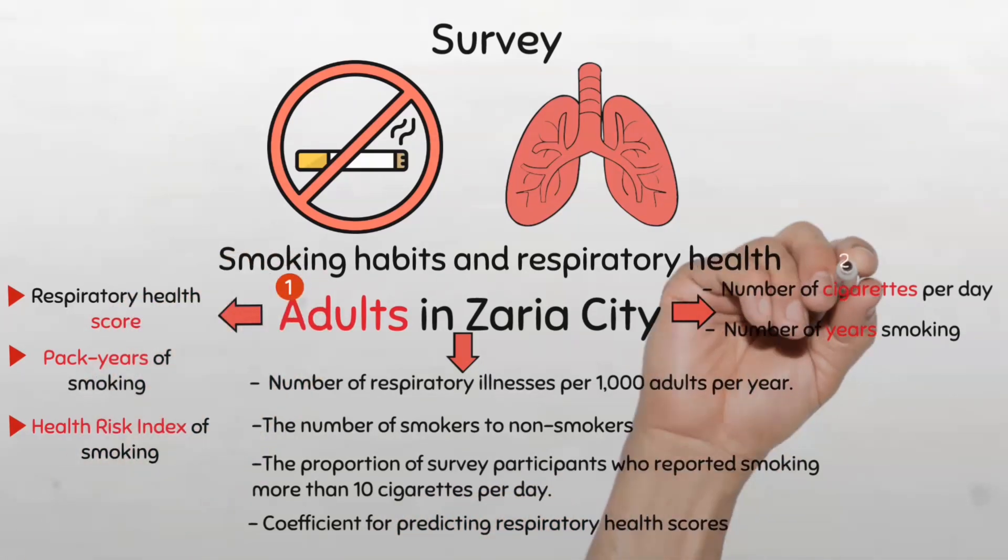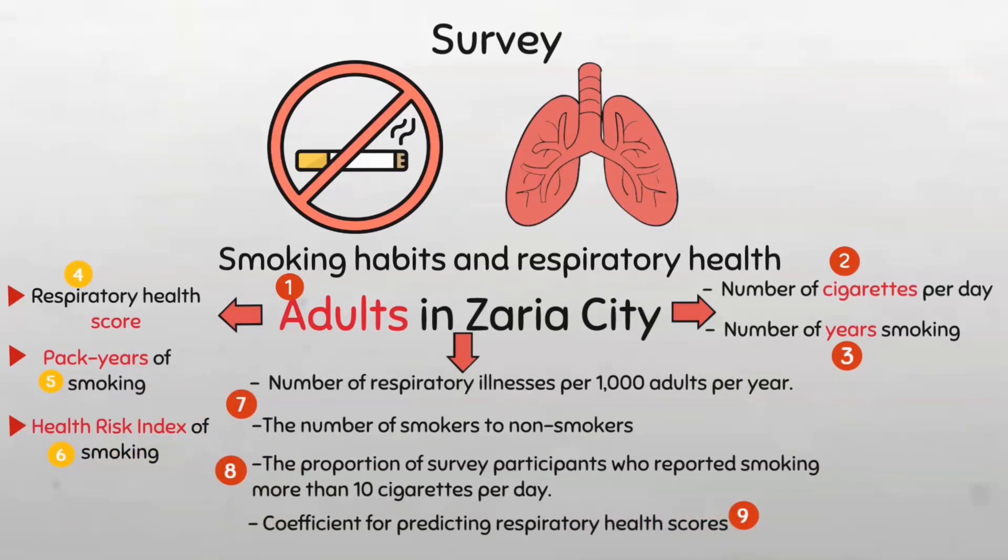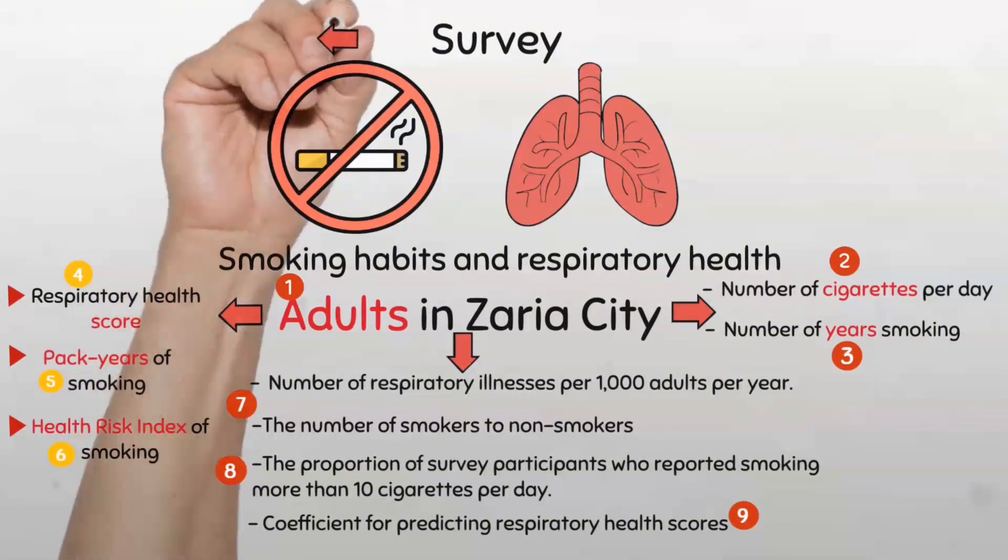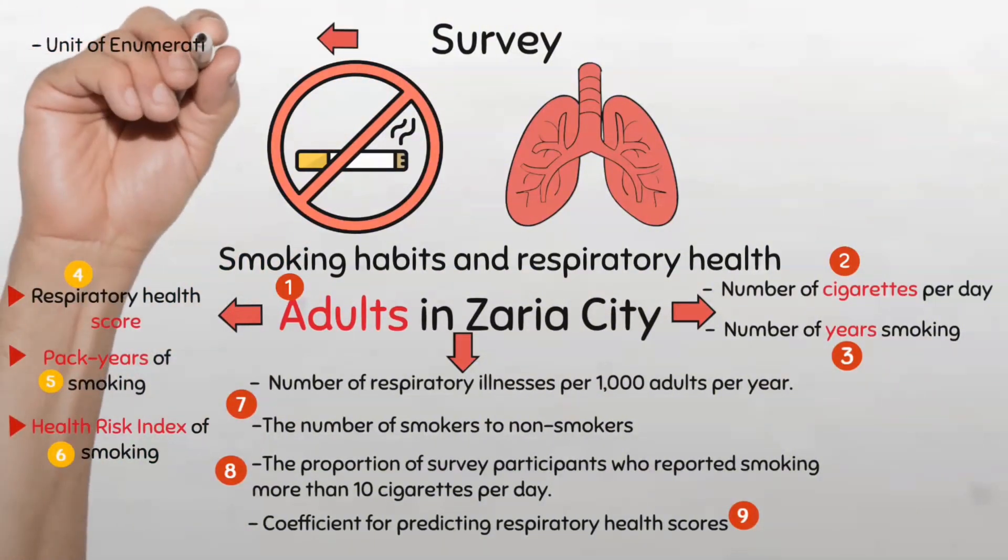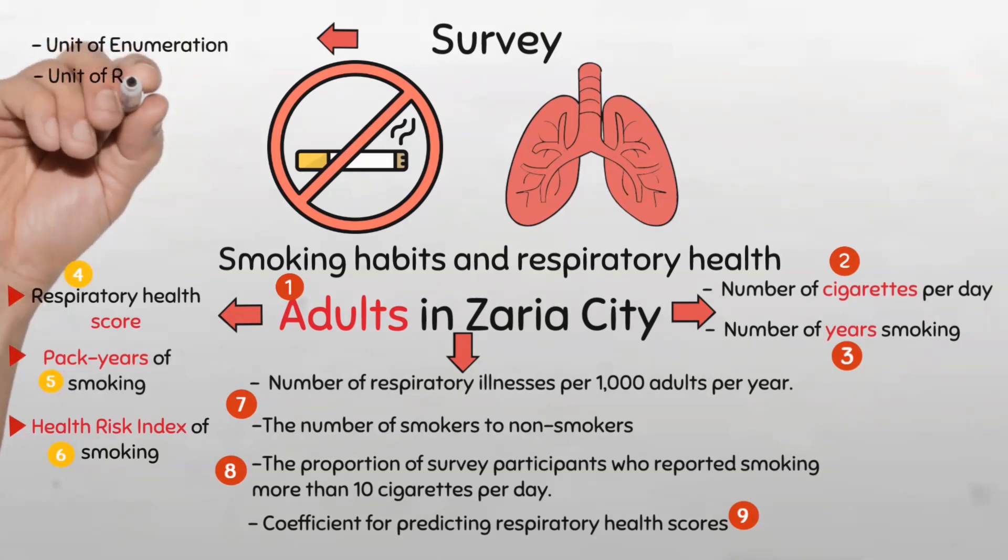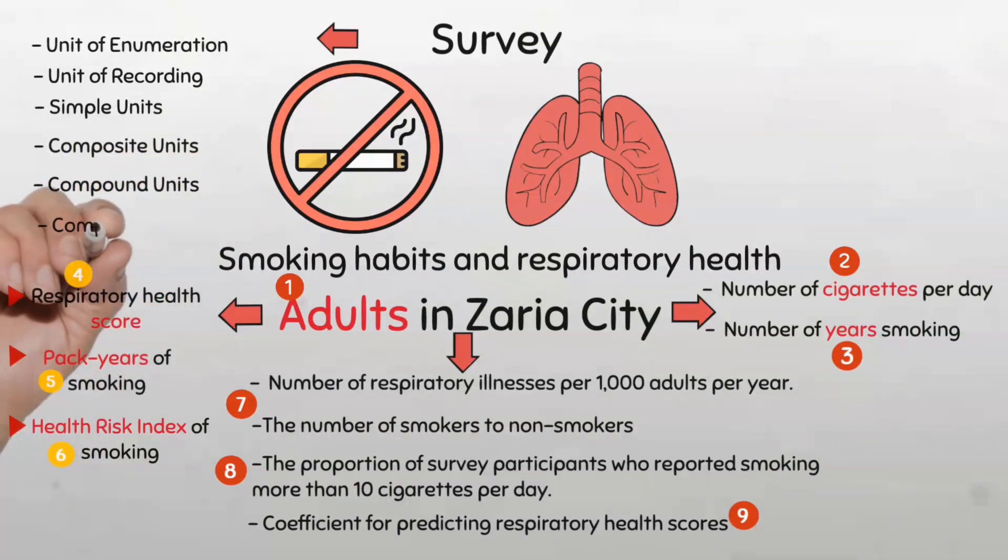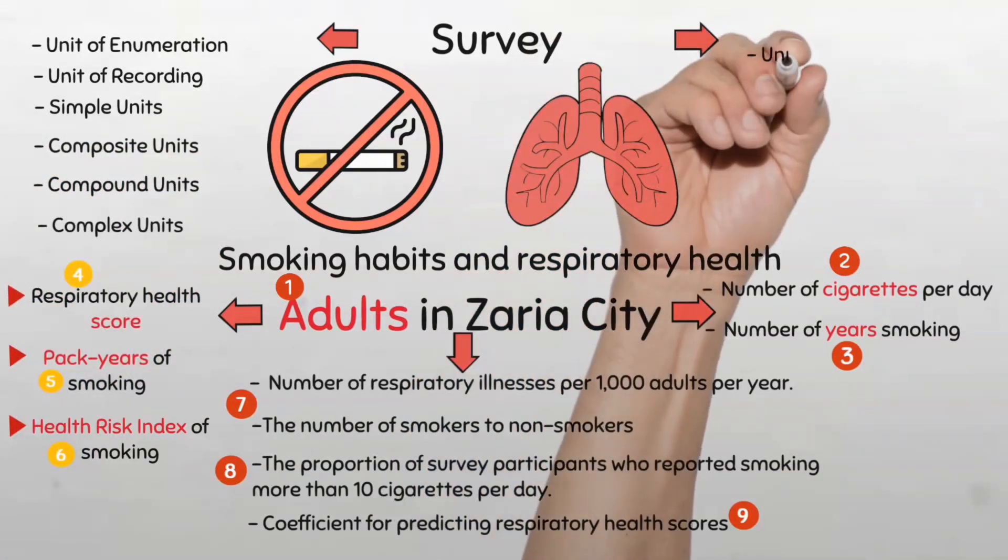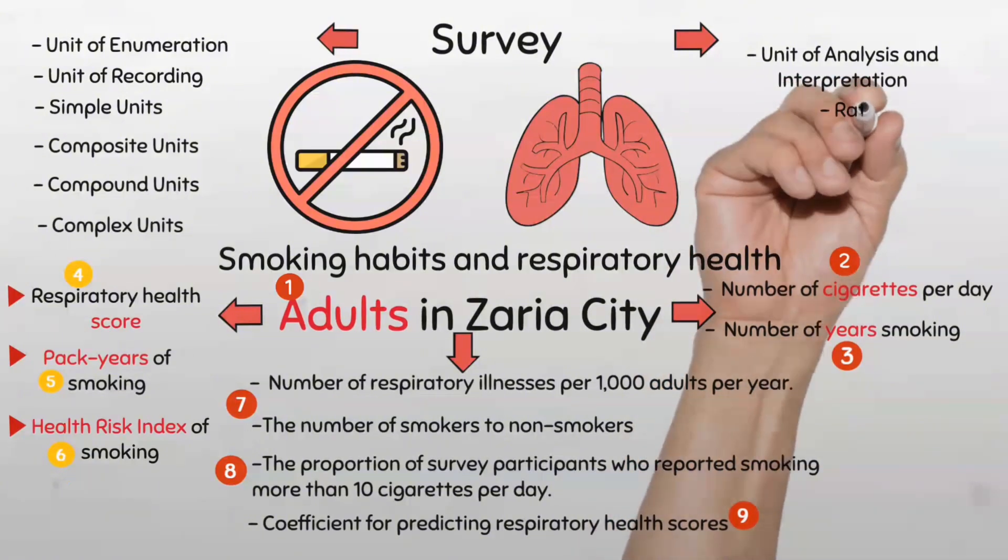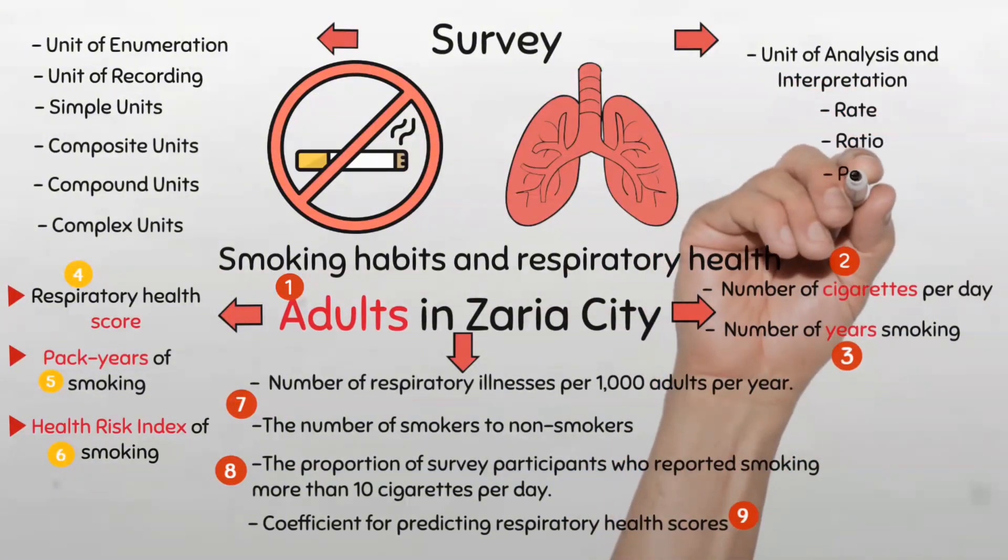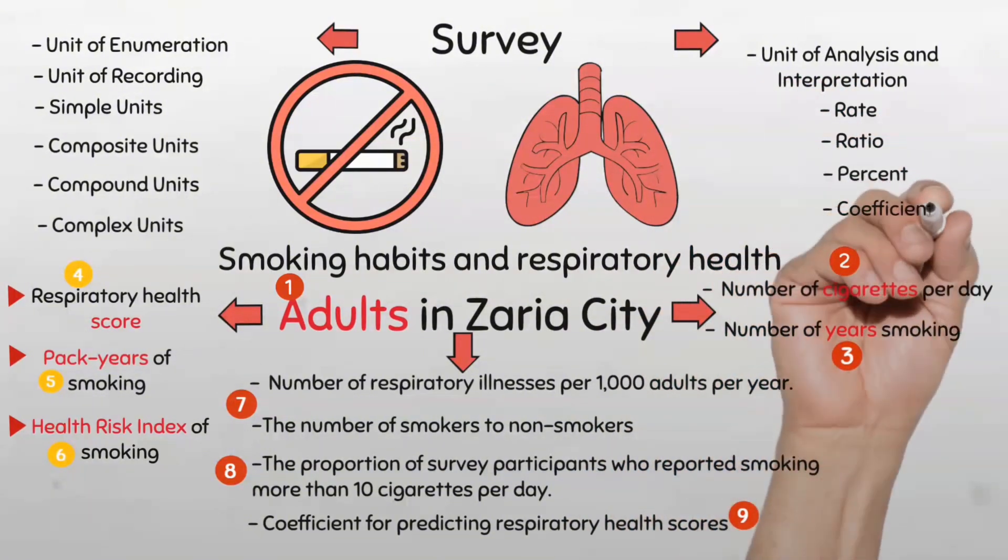So here's the question. Identify the statistical units in Dr. Umar's study in terms of the unit of enumeration, unit of recording, simple units, composite units, compound units, complex units, and the unit of analysis and interpretation in terms of rates, ratio, percent, or coefficient.